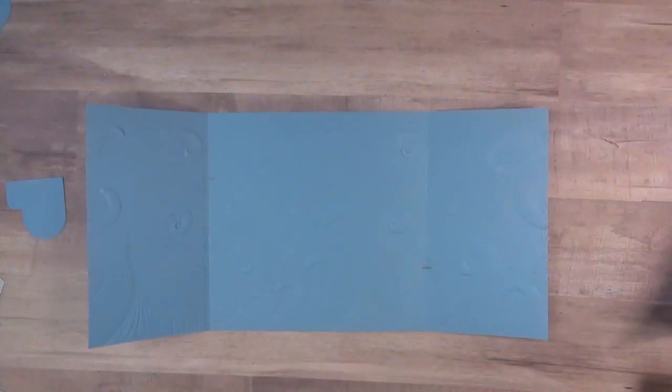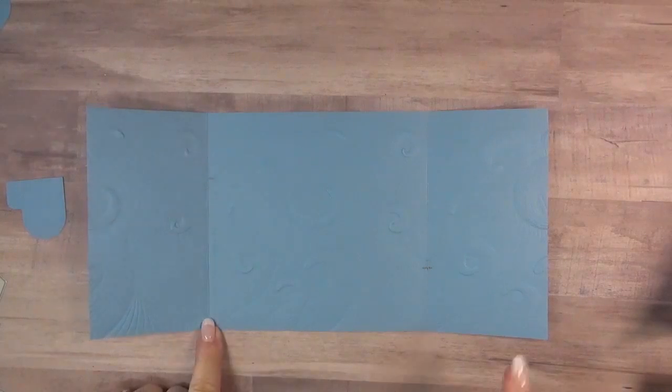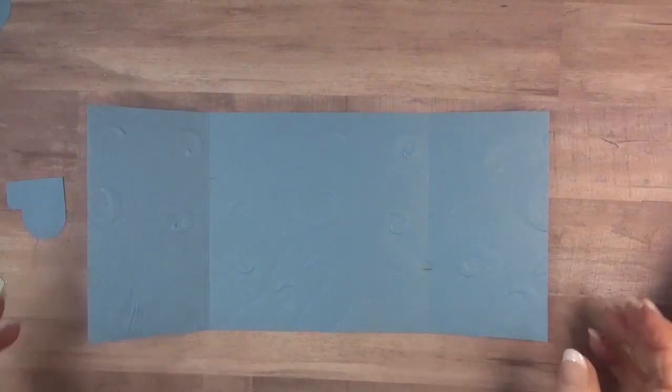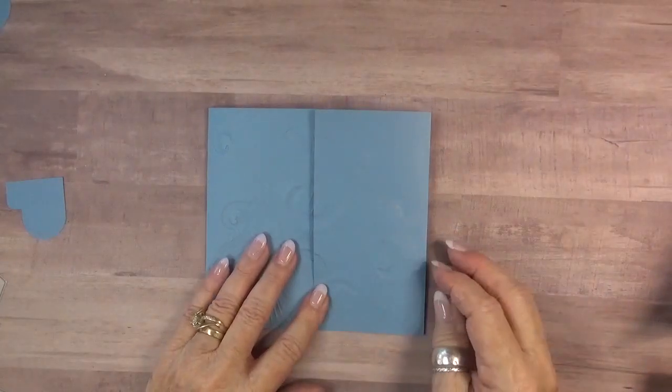So I began with a piece of cardstock that is 12x6, scoring it at 3 and at 9, and then creased it to create a gatefold card.